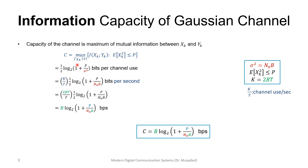Instead of representing capacity per channel use, I scale by K/T to convert units from per channel use to per second — K/T is just a unit conversion multiplier. I can also replace K with its equivalent 2BT, so T cancels out and the factor of 2 cancels, leaving us with C = B log₂(1 + P/(N₀B)).